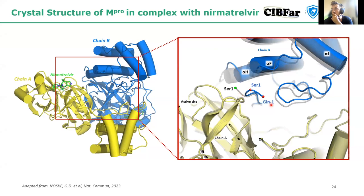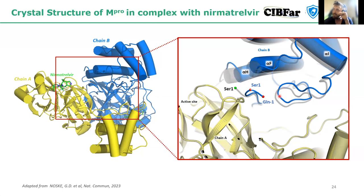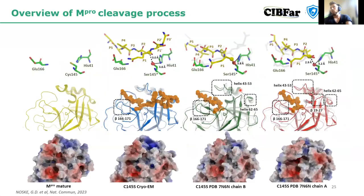What we saw was an uncleaved form of M-pro that was a dimer, with clear density showing the N-terminal extension meaning the particle was not cleaved. This seems to cause the same effect as the immature form of the protein from the previous paper where extra residues were present — however, here we have a dimer and less abrupt structural changes, and the sample is bound to nirmatrovir.